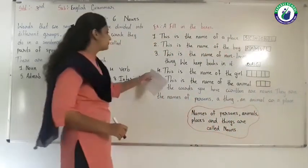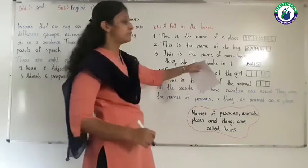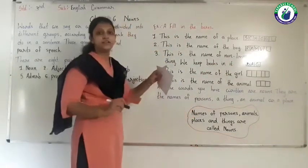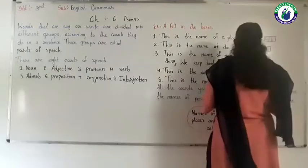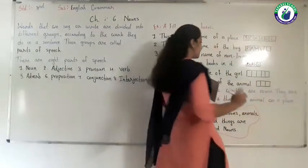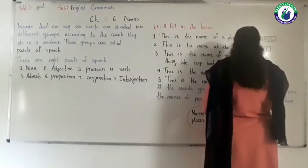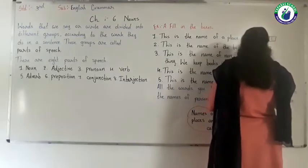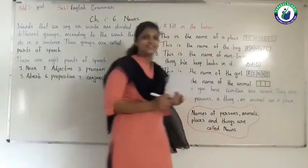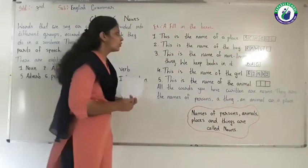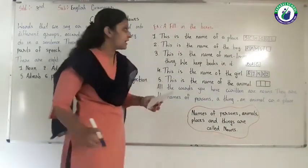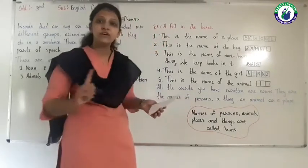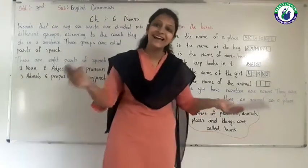Next, number 4: this is the name of the girl. So here I write the name of the girl. The name of a place, the name of a boy, the name of a thing, the name of a girl — are called nouns.